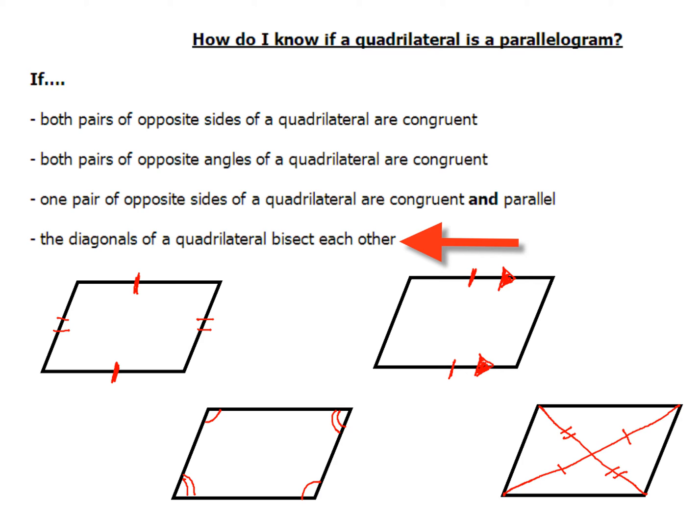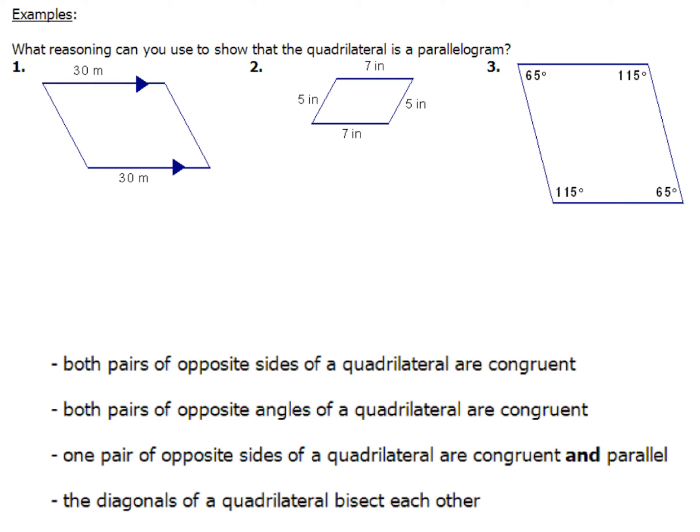Now we're going to take a look at using one of those four reasons. We're going to be given some numbers to play around with those four reasons and figure out how we can show a quadrilateral is a parallelogram in these three examples. You're going to have to use your powers of observation to figure out which one of those four reasons, if any, could be used to show that the quadrilateral is a parallelogram.